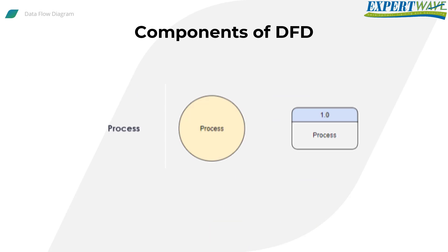The Data Flow Diagram has four components. The first is Process. A process notation is used when the data in the system needs to be manipulated and transformed, so the data flowing out of the system is changed compared to the data flowing in. Symbols of a process are rectangular with rounded corners, oval, rectangle, or a circle. The name of the process is a short sentence, one word or a phrase, to express its fundamental nature.